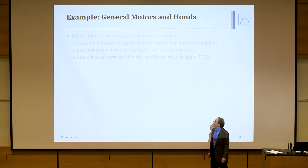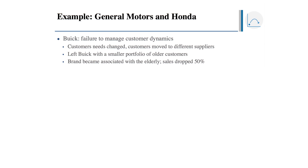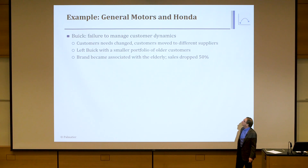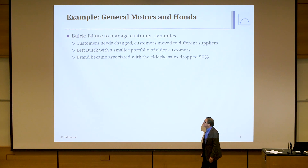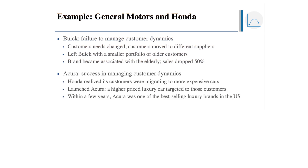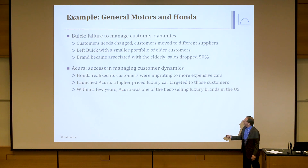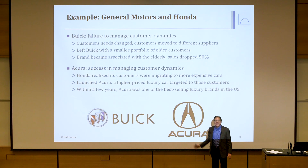Let me give you more information on Buick versus Honda — two firms that managed customer dynamics differently. Buick failed to manage it: customers' needs changed, customers moved to different suppliers, and Buick kept letting their customer base age without refreshing the brand or product offering. The result was a 50% sales drop. Honda saw the same thing — their customers were aging, becoming more successful, getting promoted, and moving on to BMW, Mercedes, Lexus. So Honda said they needed another brand. When customers left Honda for higher price points, Honda launched Acura. Within a few years, Acura became one of the best-selling luxury brands in the U.S.